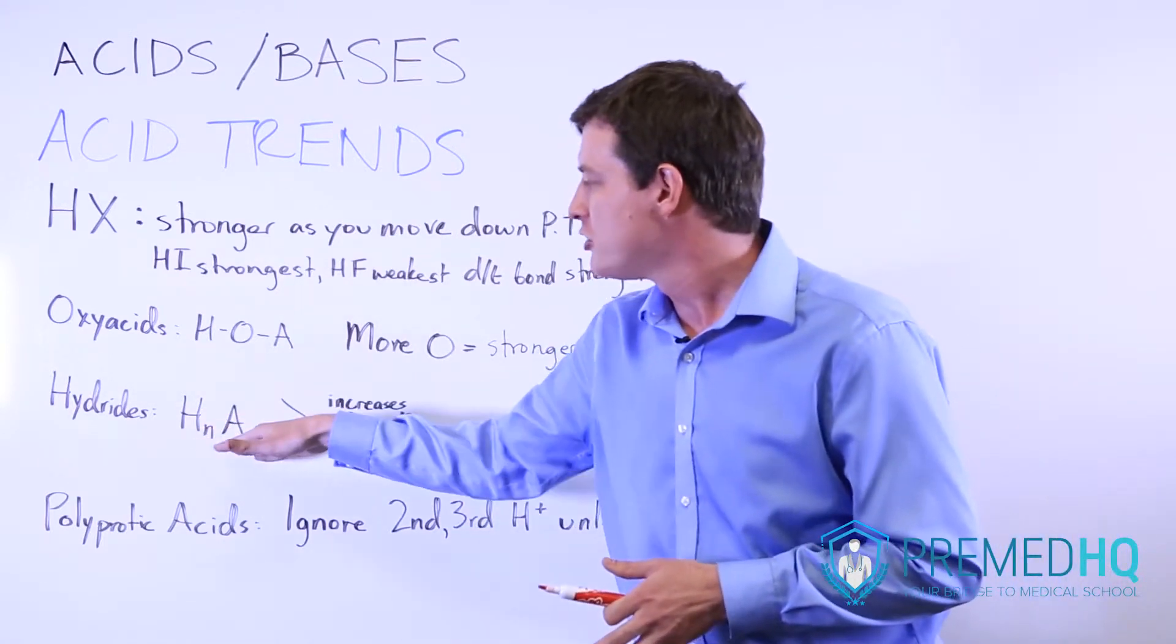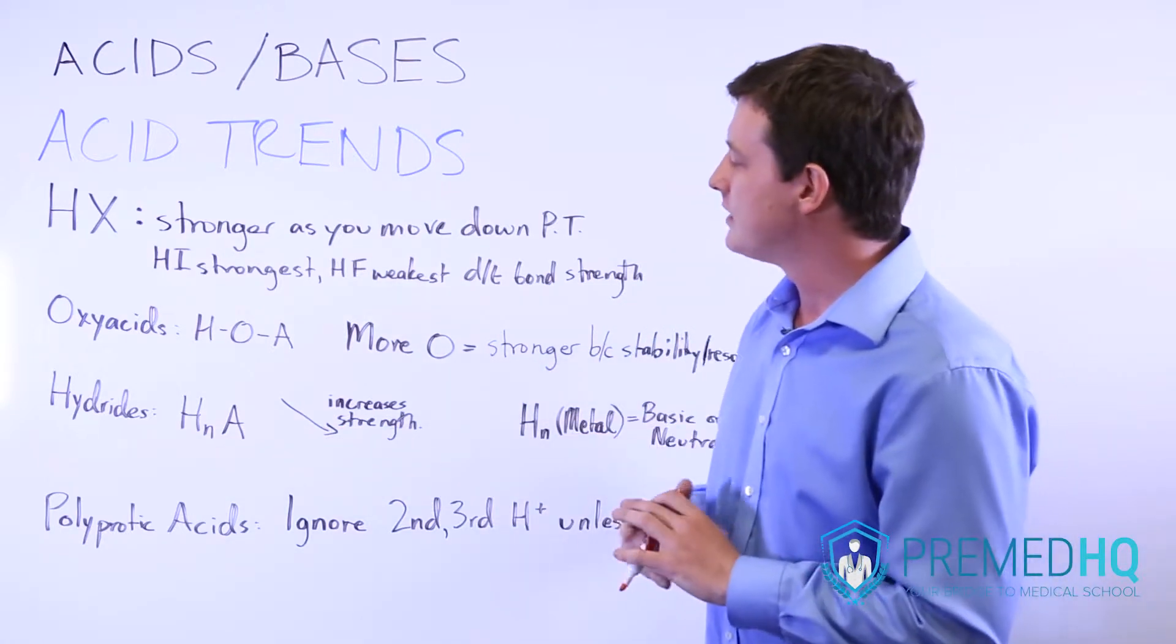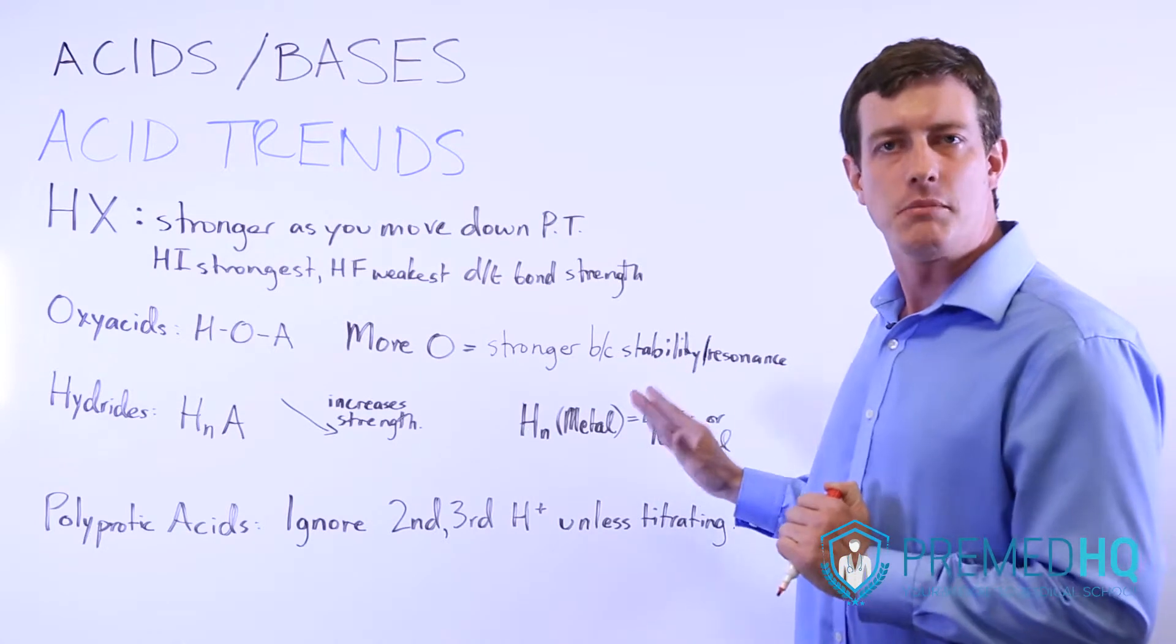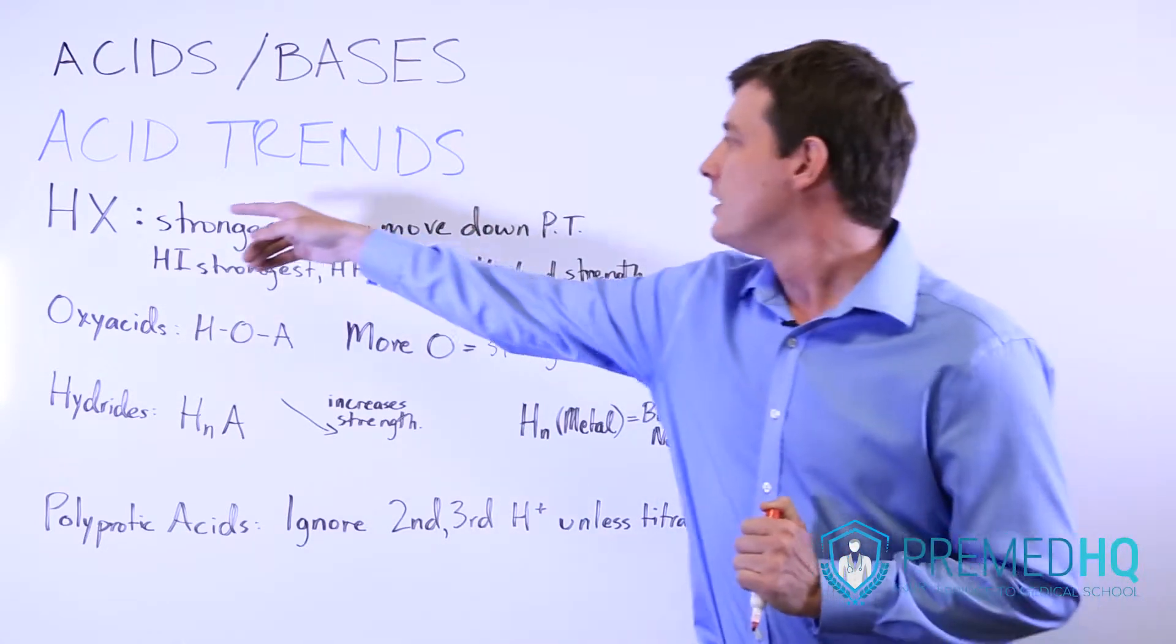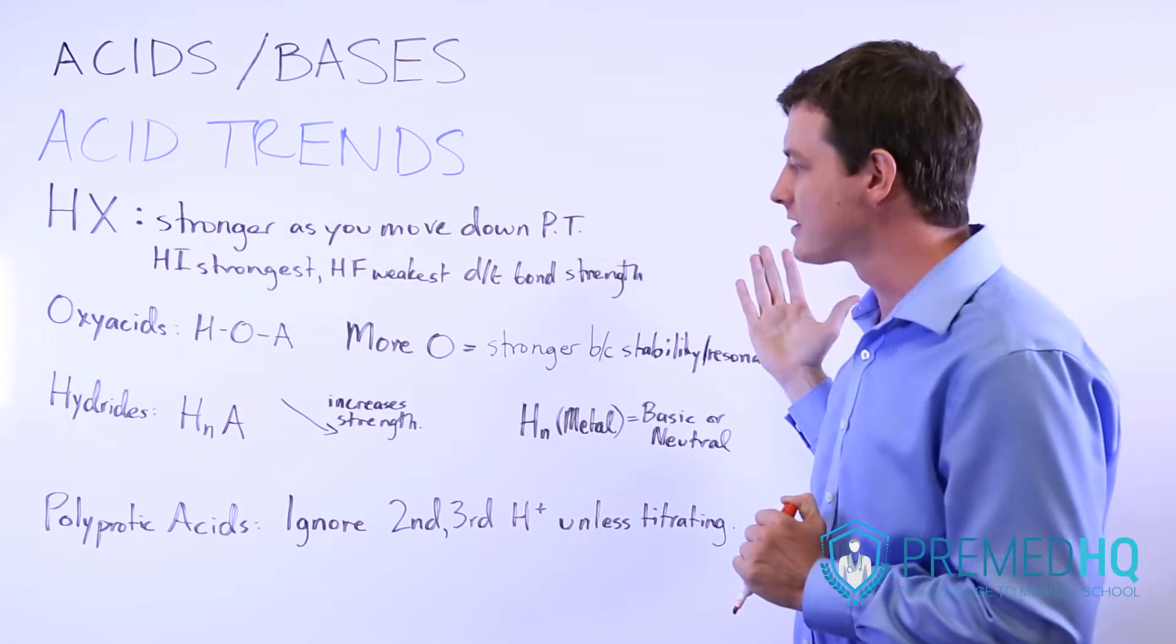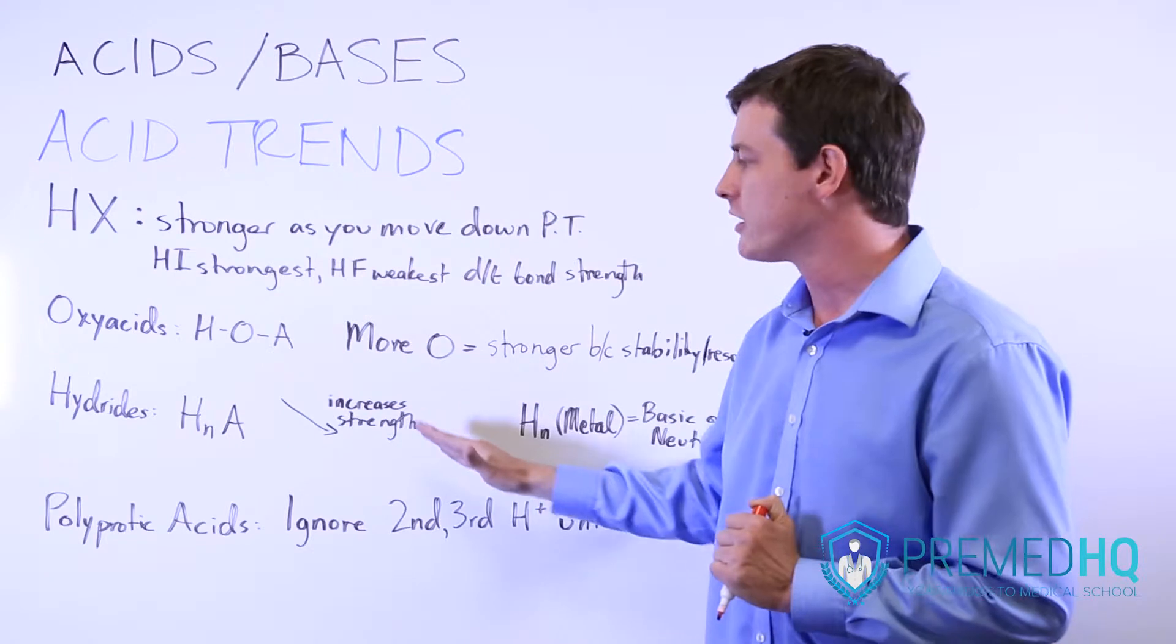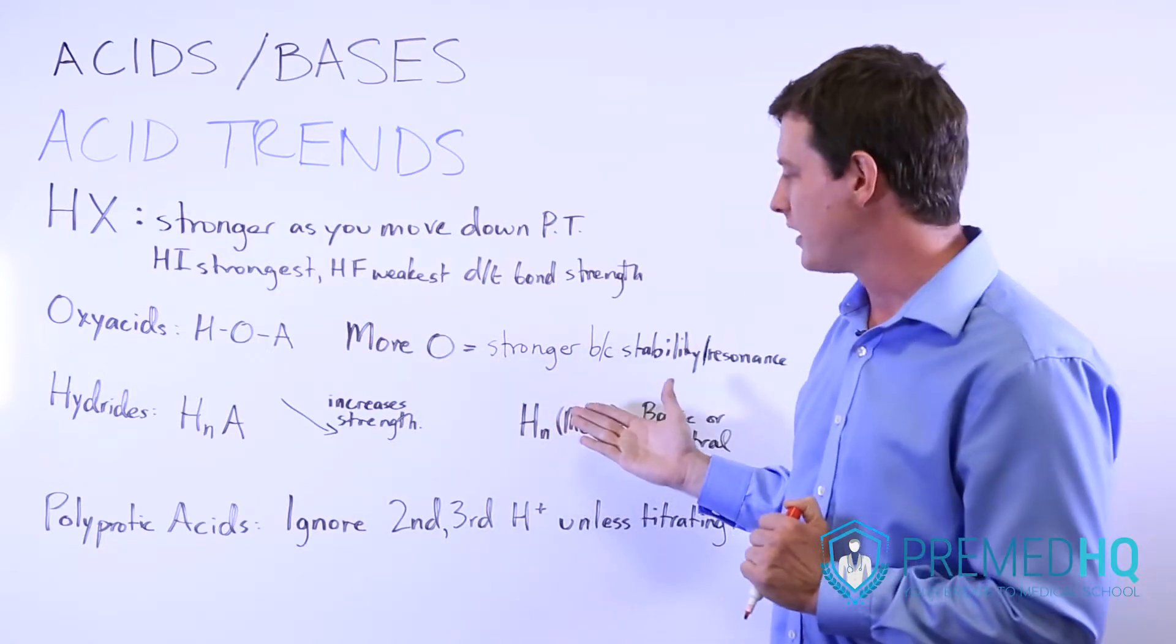Anything where you have just hydrogen and another element, those will increase in acidity as you move down into the right on the periodic table. Clearly, the halo acids on the far right with all the halogens are strong acids. And so as you move down into the right, any hydride will increase in strength.